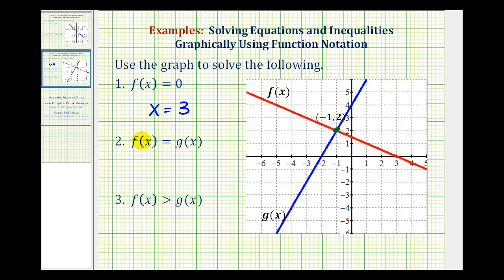But again, because the equation is expressed using functions of x, we only want the x-coordinate of this point of intersection, which we can see would be x equals negative one. Again, we don't want to give our solution as the point negative one comma two because our equation is written using functions of x.